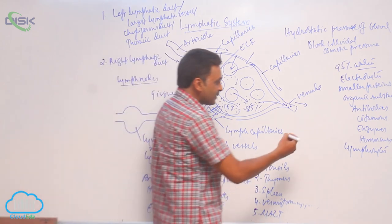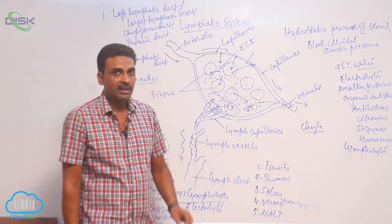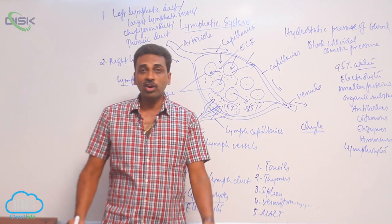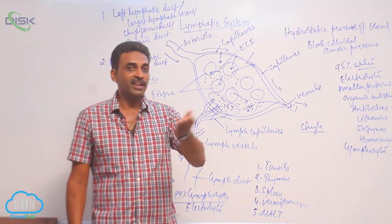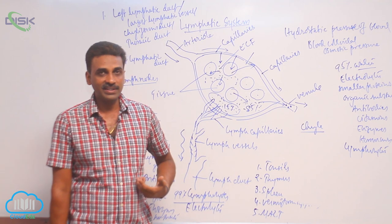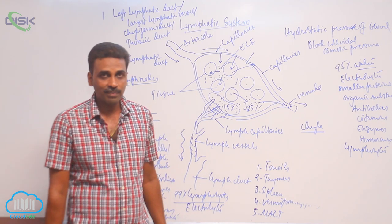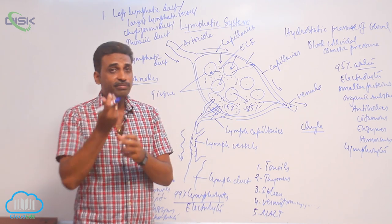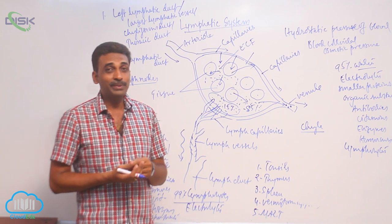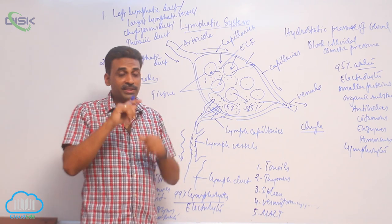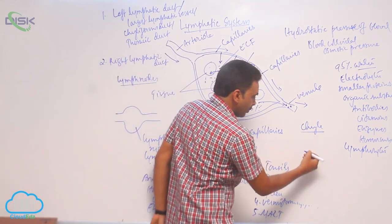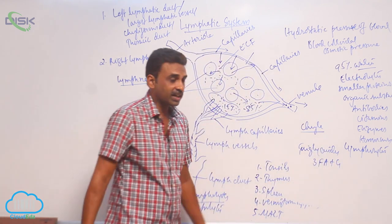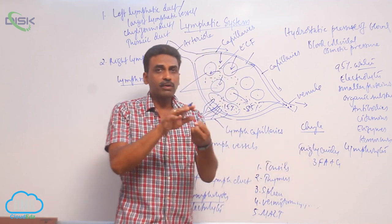Chyle is a combination of chylomicrons. Chylomicrons are nothing but triglycerides — a combination of three fatty acids and one glycerol. After fats are digested inside the intestine, they are converted into fatty acids and glycerol. Short chain fatty acids enter into blood capillaries, but long chain fatty acids and glycerol take the form of micelles and enter into the epithelium of the villus, where they combine to form triglycerides.